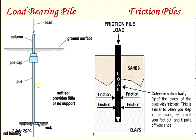For load-bearing piles, the pile cap supports the column and may be cast iron, timber, or cement concrete. Soft soil provides little or no support, so the pile is directly supported on hard rock or hard strata. In friction piles, support is from the soft strata or soil through friction between the pile and soil.